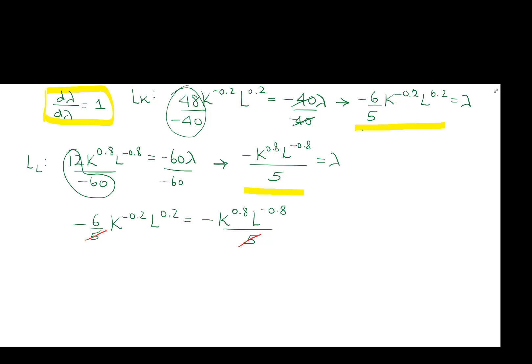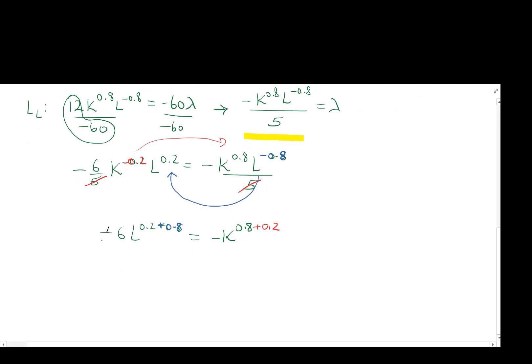And then I'm going to move all of the K's to the right side, and all of the L's to the left side, and that's going to give me negative 6, L to the 0.2 plus 0.8. When I move the negative 0.8 over, it becomes positive. And on the right side, negative K to the 0.8, and then when I move the negative 0.2 over, it becomes positive. I can also cancel the negatives here. And I end up with 6, L to the 0.2 plus 0.8 becomes L to the 1, which I just write as L. 6L equals K to the 0.8 plus 0.2. That's also just K to the 1, which is K. So 6L equals to K is what we get for expression relating L and K.